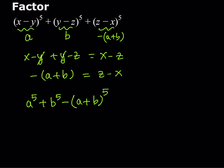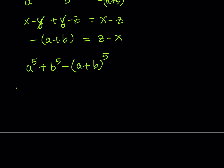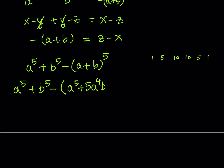Now, (a plus b) to the fifth power can be expanded using the binomial theorem. The coefficients from Pascal's triangle — the fifth row — are 1, 5, 10, 10, 5, 1. So expanding gives: a⁵ plus 5a⁴b plus 10a³b² plus 10a²b³ plus 5ab⁴ plus b⁵. You can see the symmetry here.